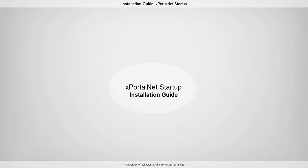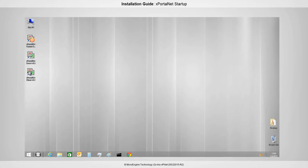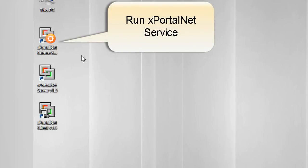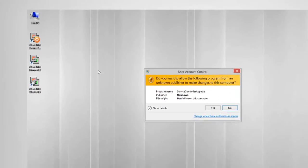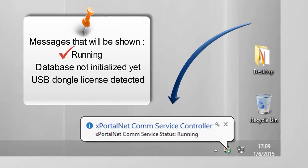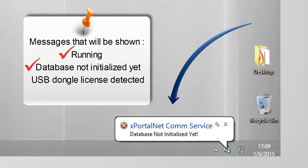In this step, we will run xportal.net service, server, and client. Before you can run the software, make sure the compatibility is set to run this program as an administrator. Run xportal.net service. You will see the service status is running, the database is not initialized yet, and the USB dongle is detected.